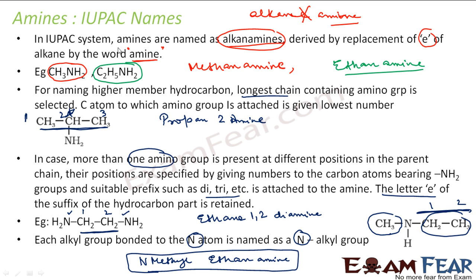So to summarize: for a simple first-degree amine, you can just say alkanamine. For example, methanamine, ethanamine. For a higher-member hydrocarbon, pick the longest chain and number it so the amine group gets the least number. In this case, numbering from either side gives the same result — the longest chain has 3 carbons, with amine at position 2, so it is propan-2-amine.